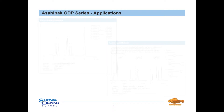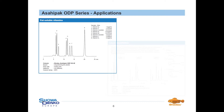To give you an idea about the separation efficiency and area of applications, two examples are given on this slide. On the left side you can see the analysis of a complex sample containing fat-soluble vitamins, for example vitamin A, D, E and K. Even if the molecule structures differ slightly, like in the case of vitamin D2 and D3, a separation could be achieved with our ODP column under isocratic conditions.